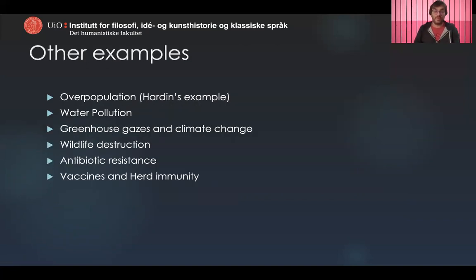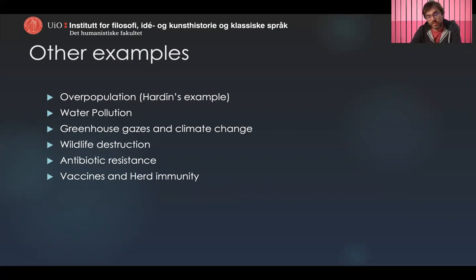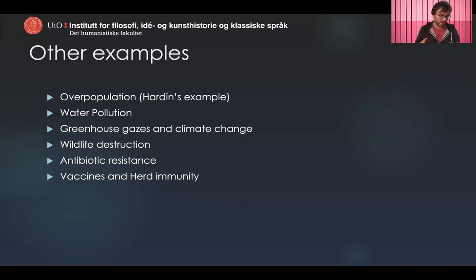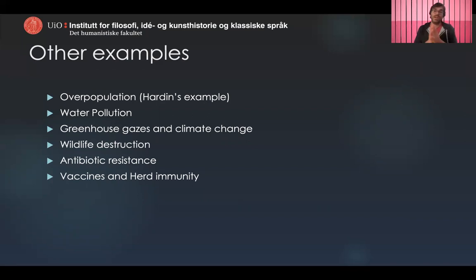What's interesting — and I want to mostly leave this to discussion — is that once you start thinking about prisoner's dilemmas and collective action problems, you see them absolutely everywhere. Many of the biggest problems of our society and our time are exactly collective action problems with a prisoner's dilemma structure. Hardin uses the example of overpopulation, but here are some other examples.